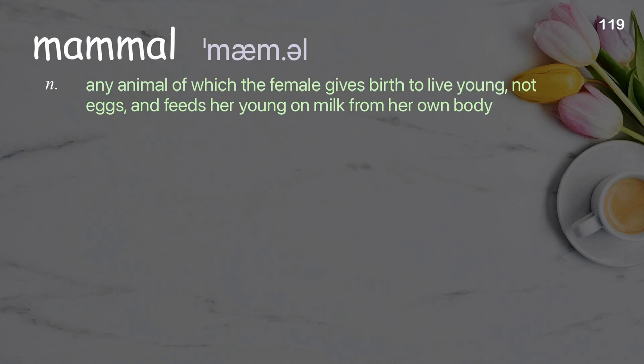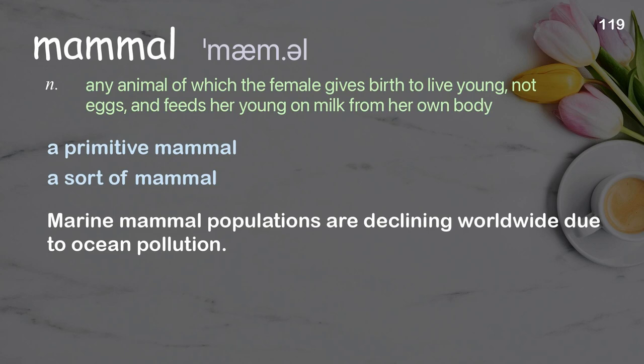Mammal: Any animal of which the female gives birth to live young, not eggs, and feeds her young on milk from her own body. Examples: a primitive mammal, a sort of mammal. Marine mammal populations are declining worldwide due to ocean pollution.